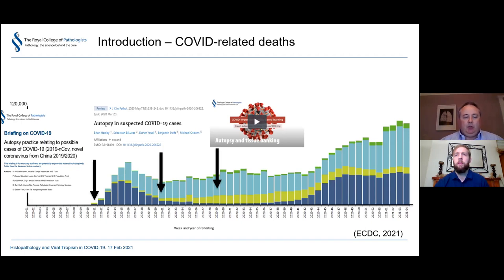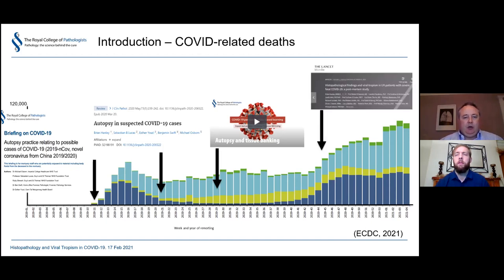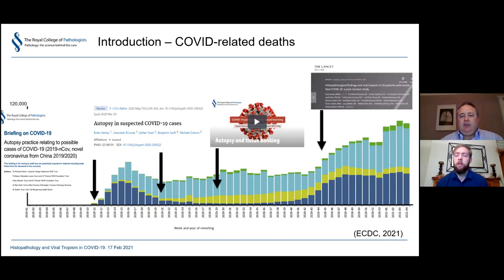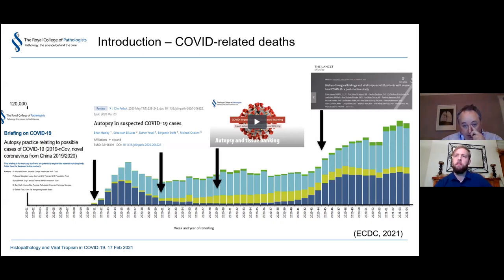The sampling was specifically focused on areas that researchers felt were useful for COVID. The findings of our cohort of 10 cases were published in the Lancet Microbe towards the latter part of last year. You can read more about the cases and descriptions of what we found there. This talk is based largely on that publication and some research we have done around those cases.